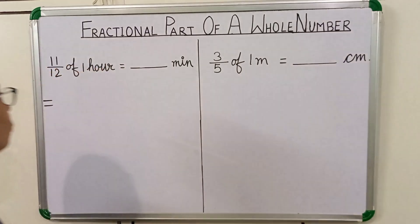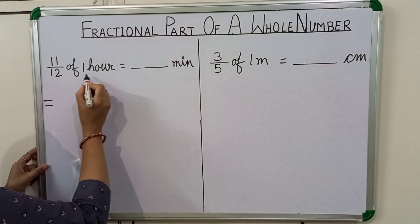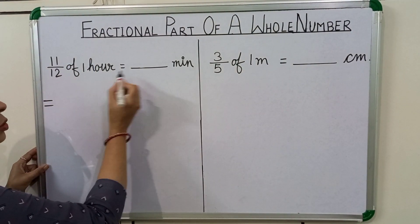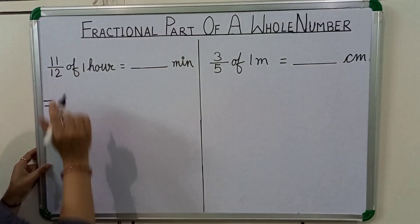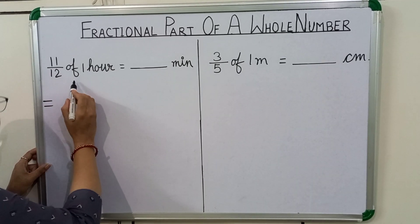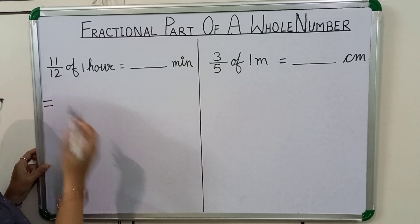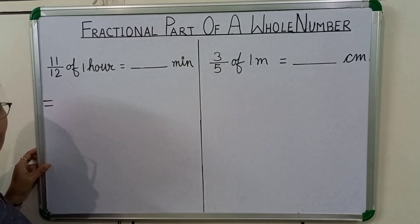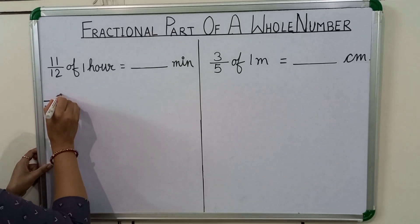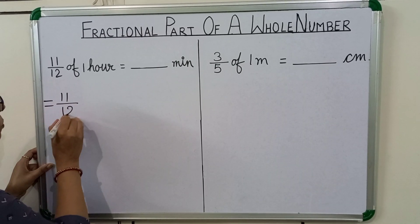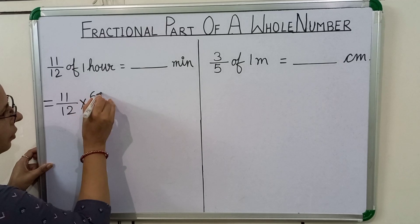First question is: 11 twelfth of 1 hour is equal to how many minutes? As you know, in mathematical terms, 'of' represents multiplication. So we can write 11 upon 12 multiplied by 60.